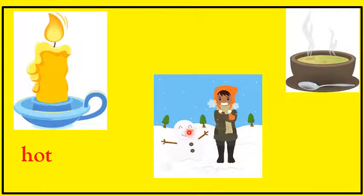Our next picture is a girl. She's in snow, and on the side of her is a snowman. Do you think this girl is in a hot place or a very cold place? We don't have snow here in the Bahamas, but maybe you have been somewhere that snows. Anywhere that snows is a very cold place. This girl has on her sweater, mittens, boots, and a hat — because she is cold.